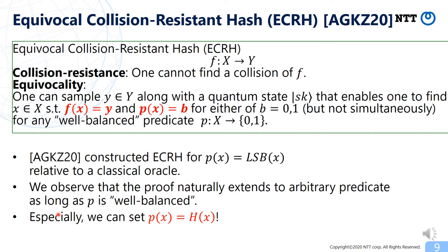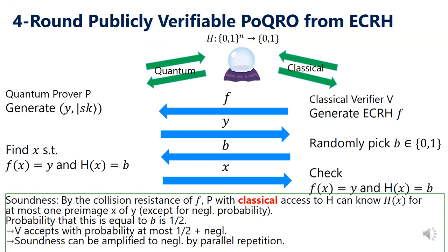In the work of Amos et al., they constructed ECRH for the case where the predicate is the least significant bit of X relative to some artificial classical oracle. We observe that the construction naturally extends to arbitrary predicate as long as P is well-balanced. Especially, we consider setting the predicate by using a random oracle with one-bit output. By using ECRH for such a random oracle predicate, we construct publicly verifiable PoQRO as follows.